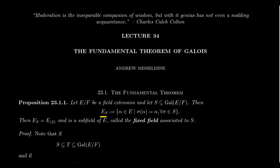For this lecture series, we adopt the notation E_S as the set of all elements alpha from E such that when you apply an automorphism sigma from S to alpha, you get back alpha — and this must hold for all automorphisms in S. So E_S is the collection of all things in E such that every automorphism in S fixes those elements; these are the elements not moved by any automorphism in S.